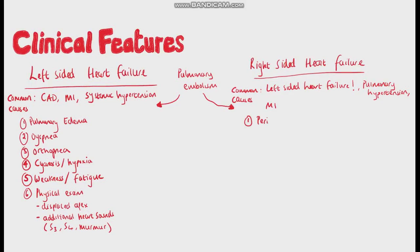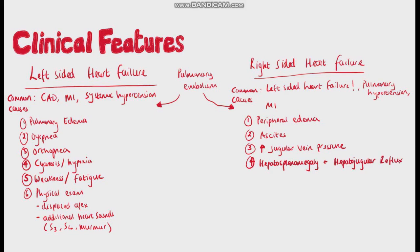Clinical features include peripheral edema, ascites, an increased jugular venous pressure. You may also see hepatosplenomegaly and hepatojugular reflux, and this is a clinical sign where pushing on the liver causes blood that is stagnant in the liver to be pushed up and is seen as an increase in the jugular vein distension.